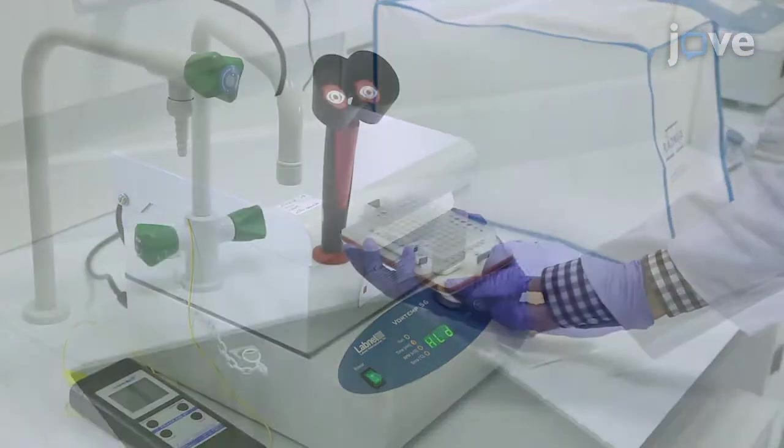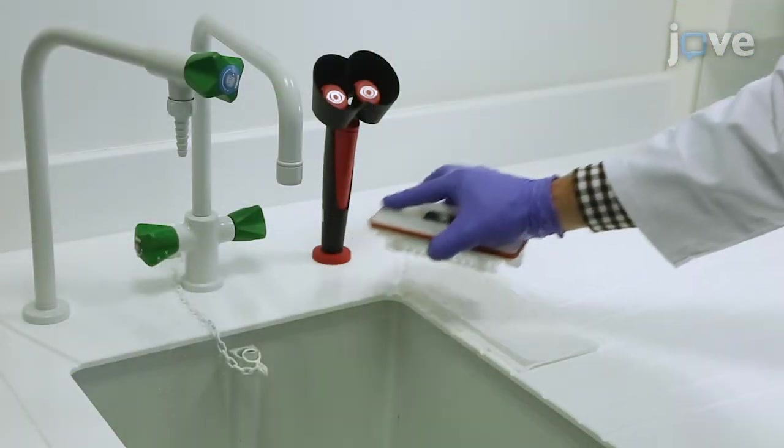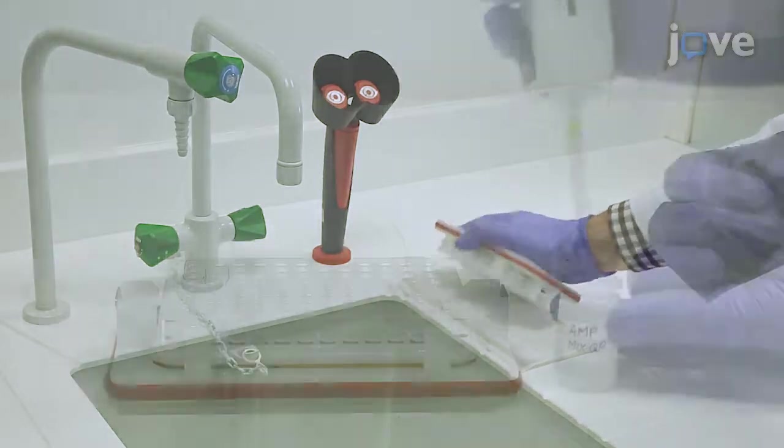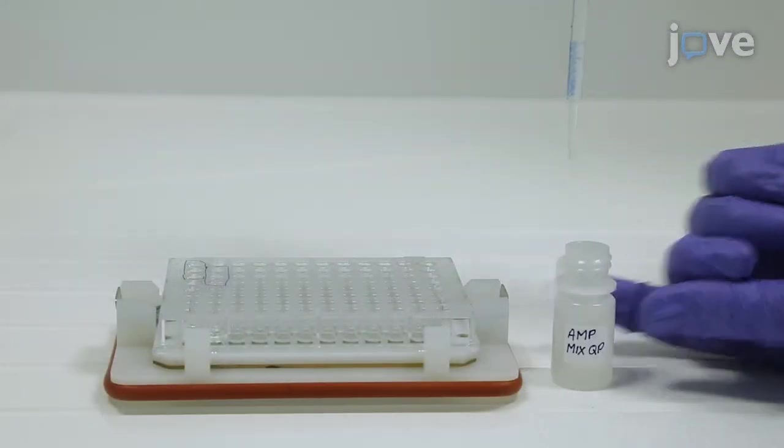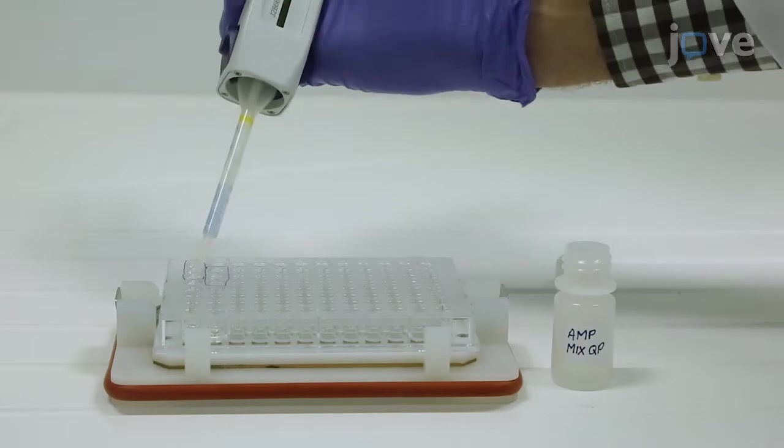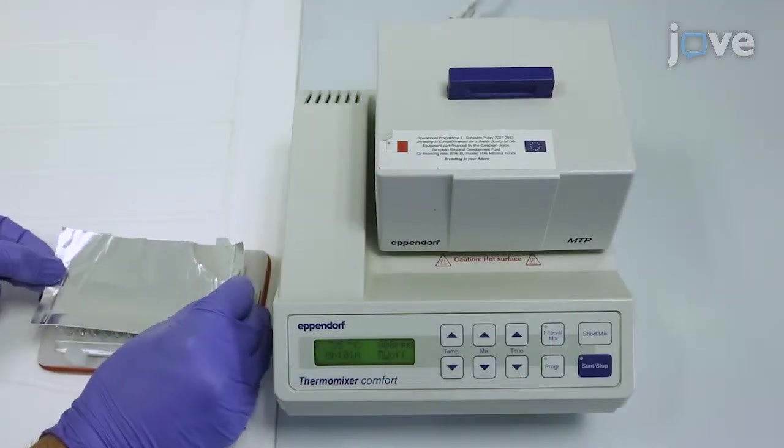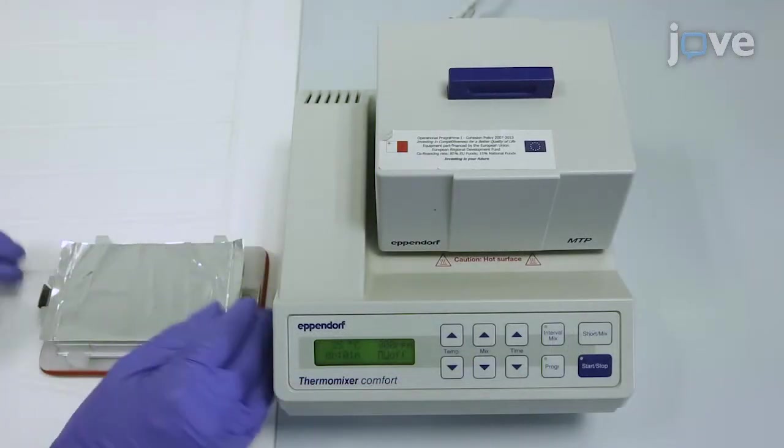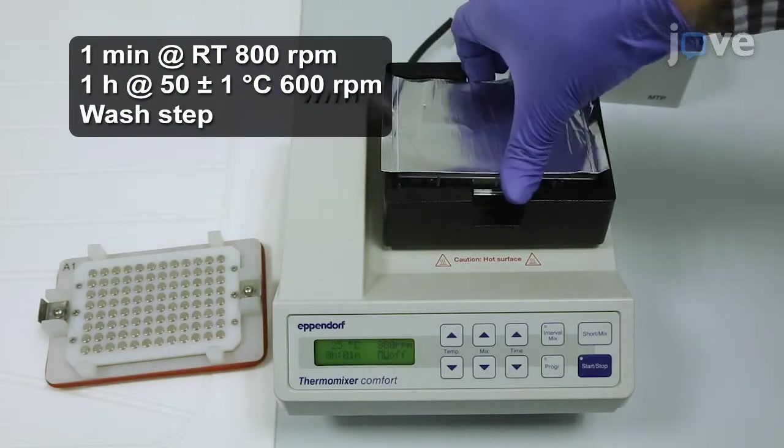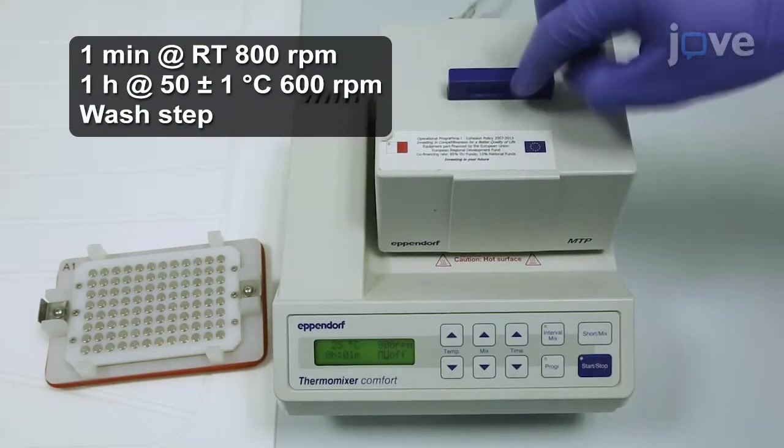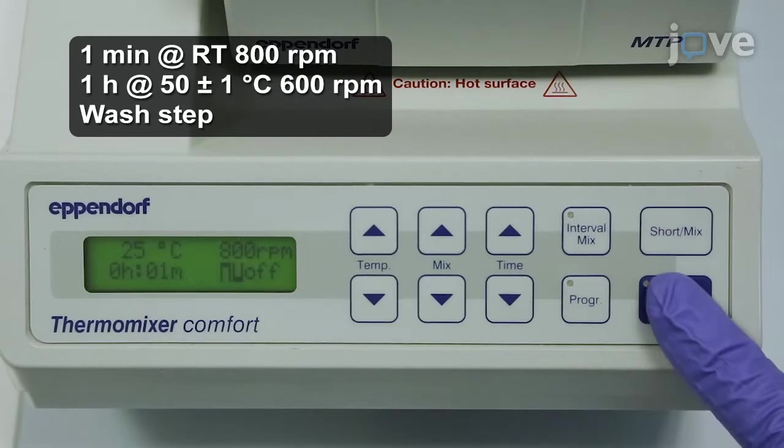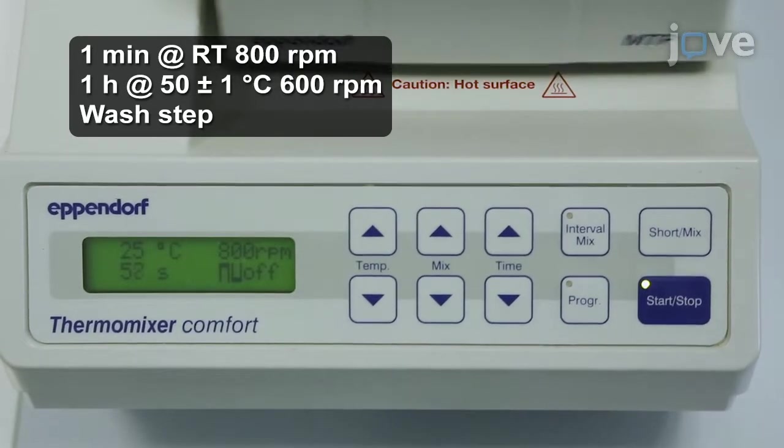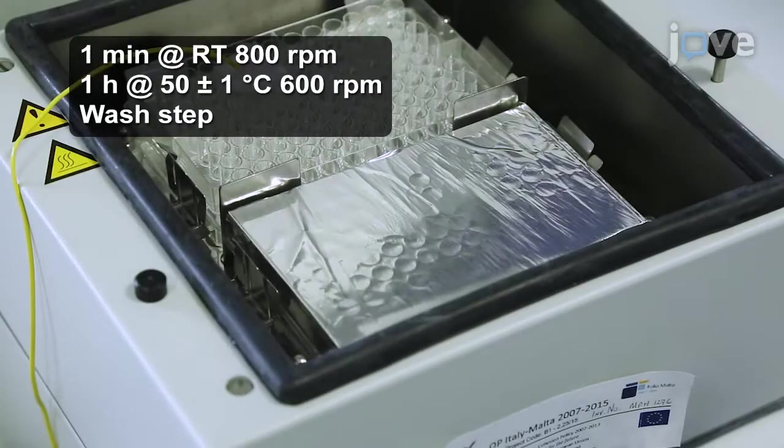When this is complete, perform another wash step. Next, reload the wells with 50 microliters of the amplifier reagent. Seal the plate with an aluminum plate seal and repeat shaking incubation of one minute at room temperature, followed by an hour at 50 degrees Celsius, followed by another wash step.